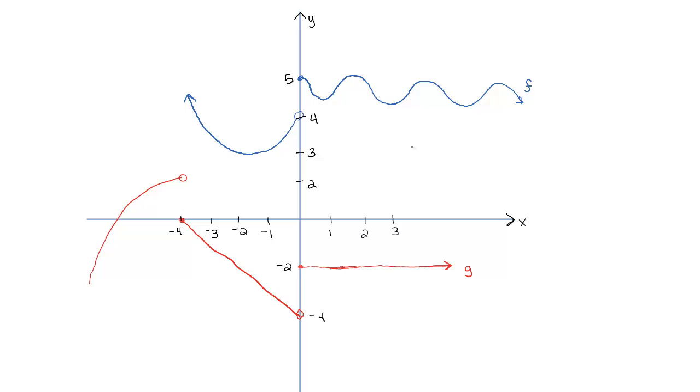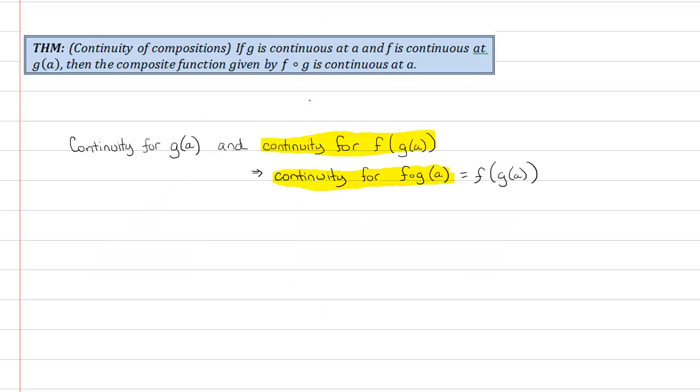As a graphical example, I think we should start with this. The stuff in red is g, a piecewise defined function. The stuff in blue is f, also a piecewise defined function. We're going to show that f composed with g of x is actually continuous at 2. Recall by the theorem, to show it's continuous at 2, we have to first show that g is continuous at 2, and then that f is continuous at g of 2.